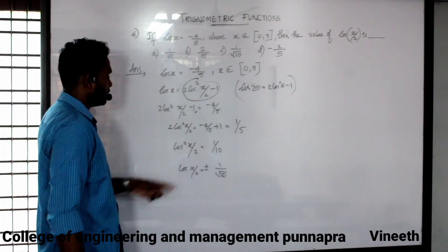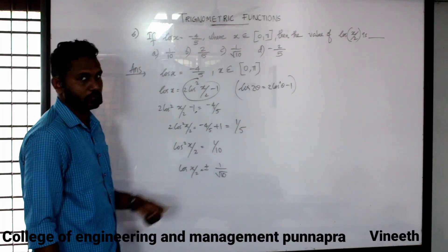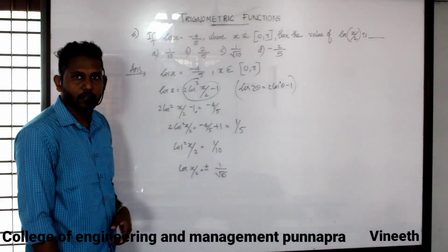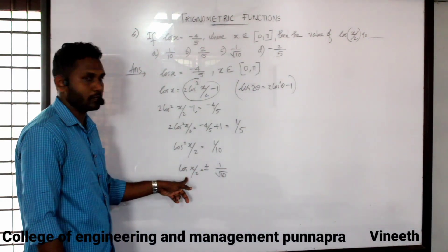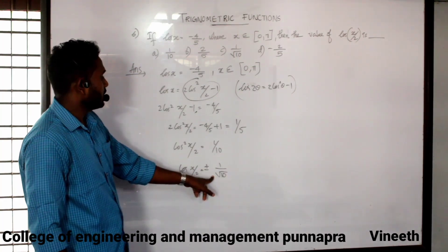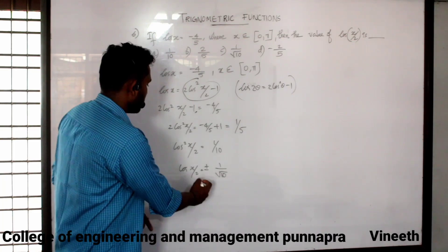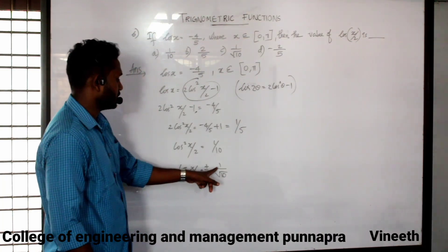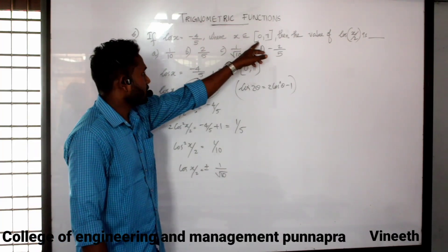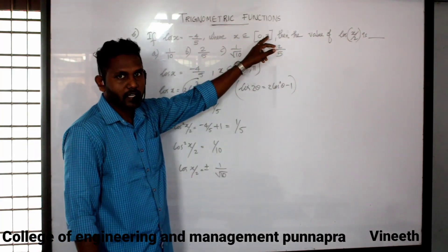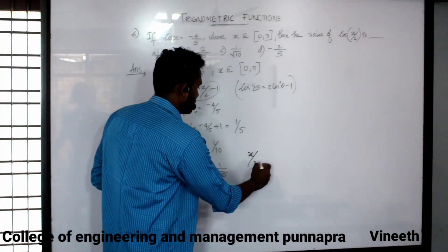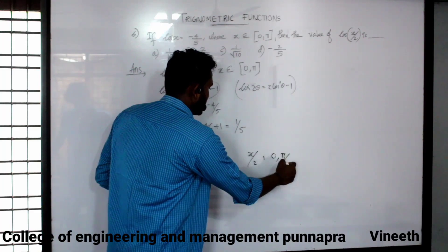So cos squared(x/2) equals 1 by 10, giving cos(x/2) equals 1 by root 10.